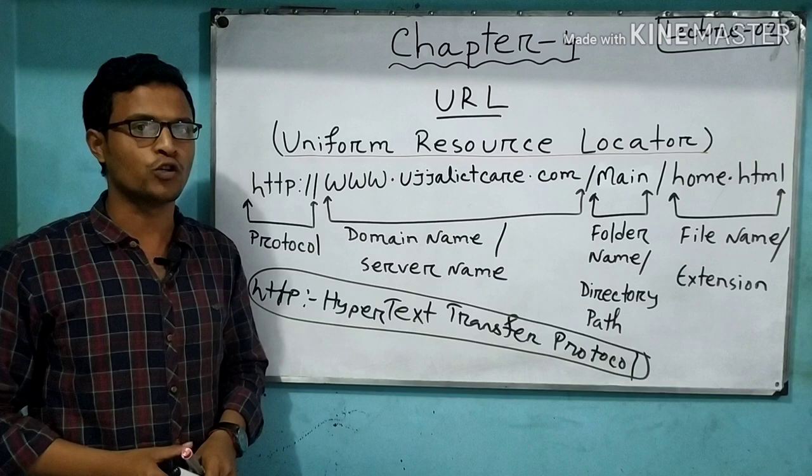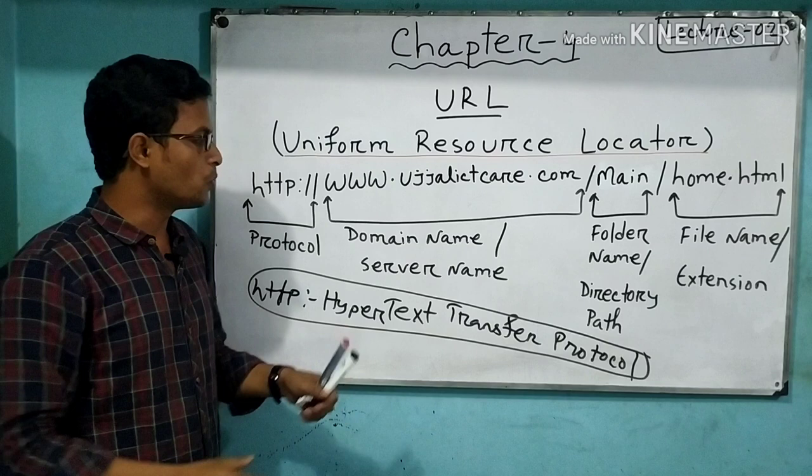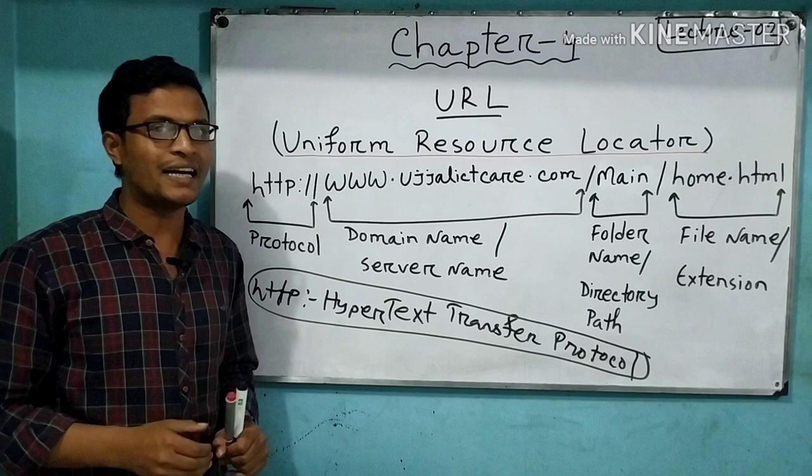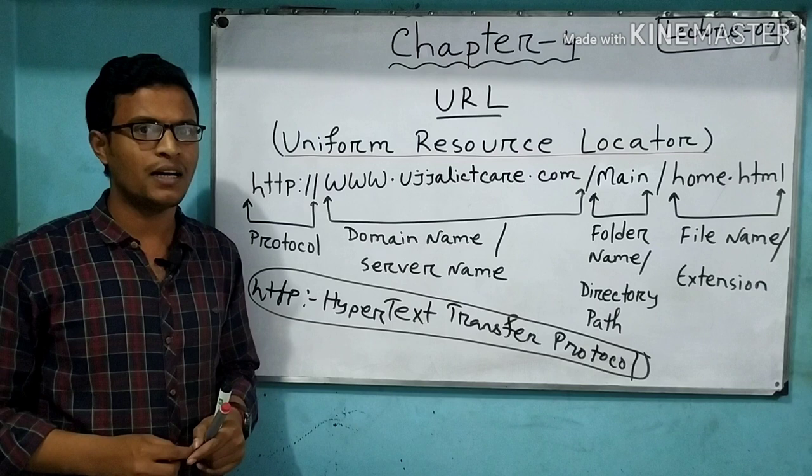Then, it is called www.icdcat.com, and that is called the domain name. The domain name is an important part of the URL. Let's look at how to use the domain name.